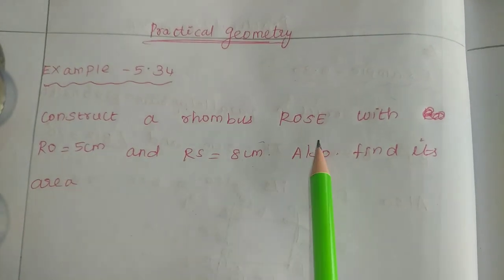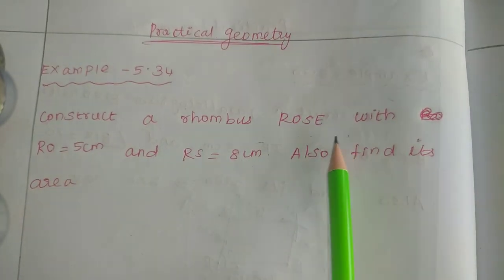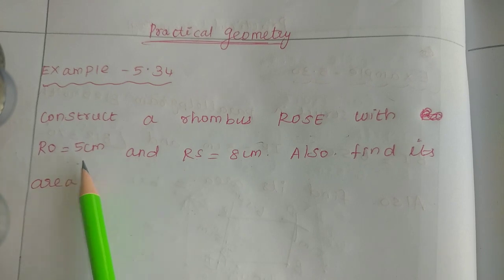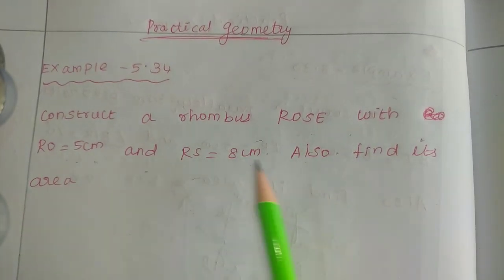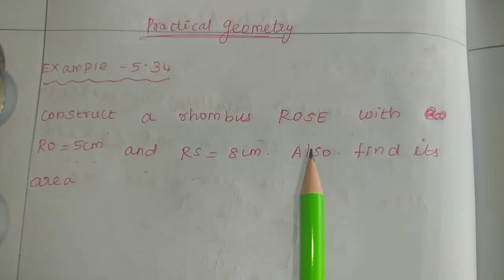Construct a rhombus ROSE with RO equal to 5 cm and RS equal to 8 cm. Also find its area. So how do you construct it?